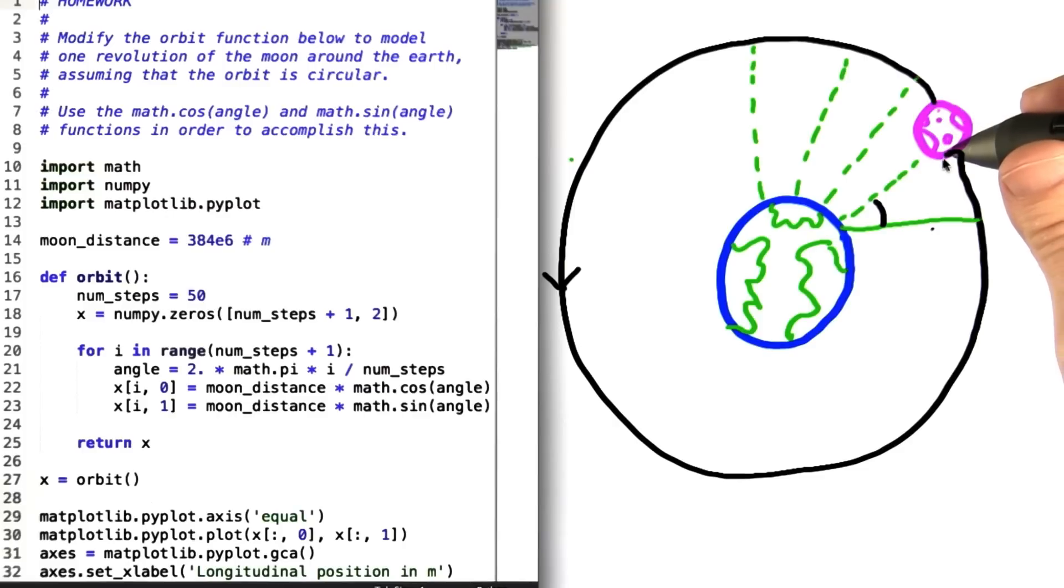That means that at any given moment, we can draw a line from the moon down to this horizontal line to create a right triangle, which will then allow us to use sine and cosine in conjunction with this angle to determine the moon's vertical and horizontal distance from the earth.